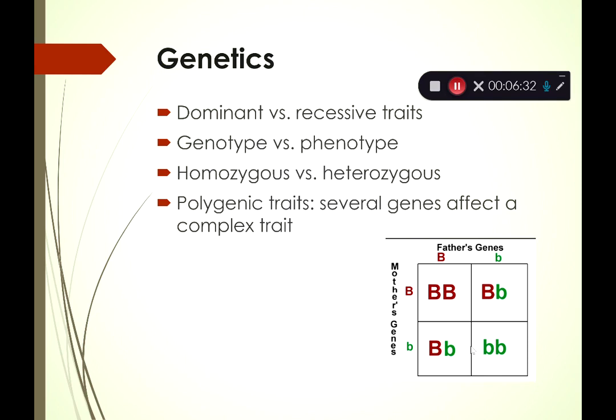If you have two of the same genes on that pair of chromosomes, that's homozygous — two brown-eye genes or two blue-eye genes, they match. If you have different ones — a brown-eye and a blue-eye gene in that pair — that's heterozygous. All three of the combinations with at least one dominant gene would be the same phenotype, but different genotypes.